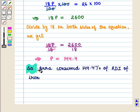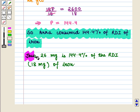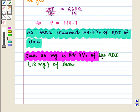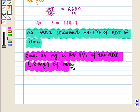So Anna consumed 144.4% of RDI of iron. Thus, we can say that 26 mg is 144.4% of the RDI, i.e., 18 mg of iron.